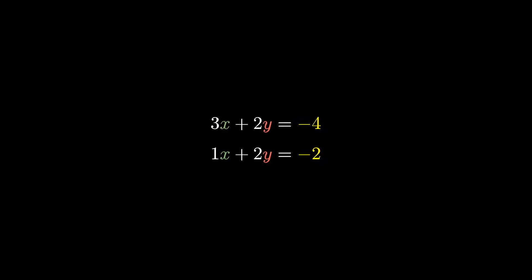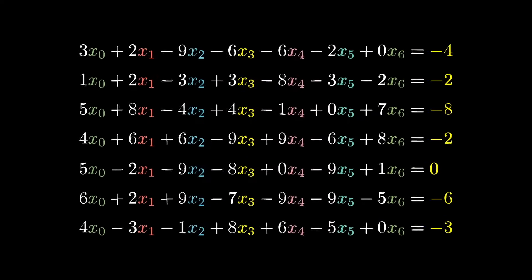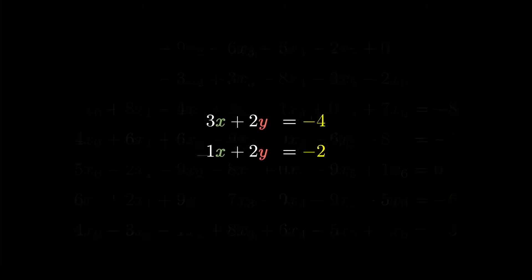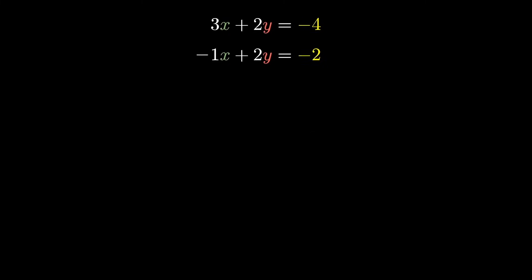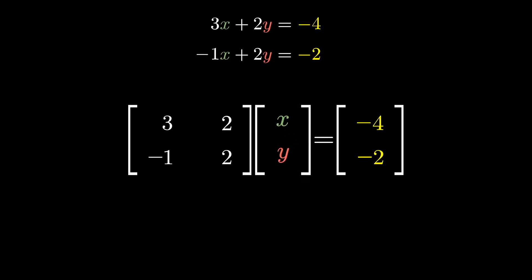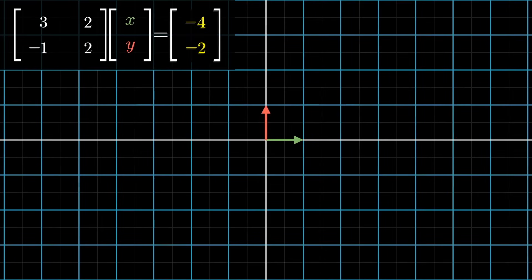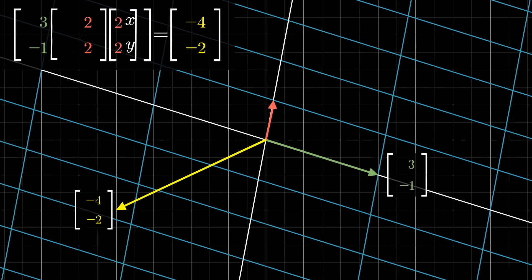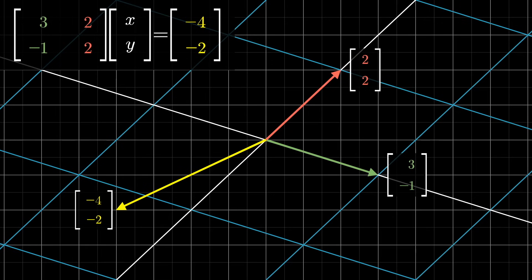The setup here will be some linear system of equations, say with two unknowns x and y, and two equations. In principle, everything we're talking about will also work for systems with a larger number of unknowns and the same number of equations. But for simplicity, a smaller example is nicer to hold in our heads. As I talked about in a previous video, you can think of this setup geometrically as a certain known matrix transforming an unknown vector x, y, where you know what the output is going to be — in this case, negative four, negative two. The columns of this matrix tell you how it acts as a transform, each one telling you where the basis vectors of the input space land.